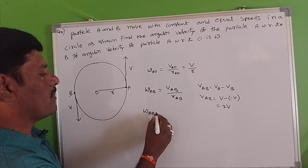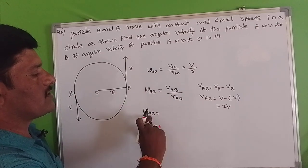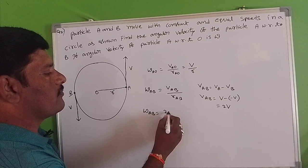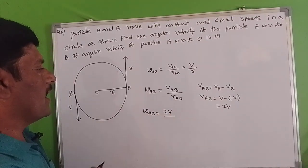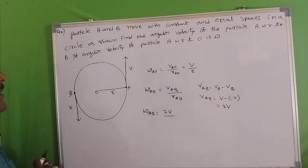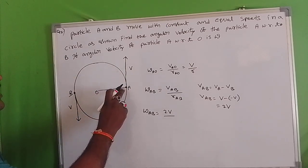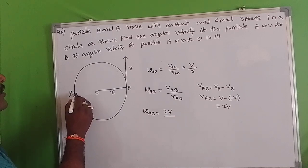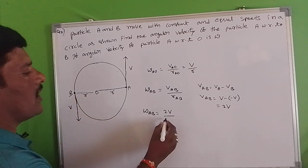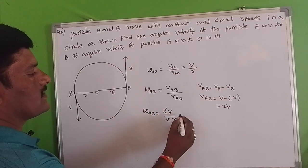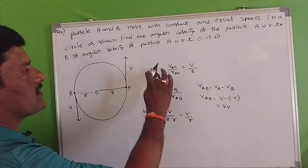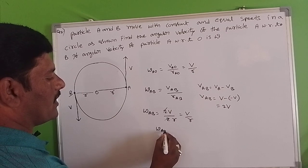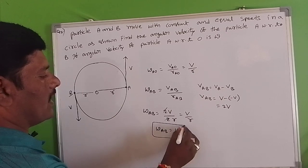The velocity of A with respect to B is 2V. So the angular velocity of A with respect to B equals 2V by R_AB. From the figure, A to O is R and O to B is R, so R_AB equals 2R. Therefore omega_AB equals 2V by 2R — the 2s cancel — giving V by R, which is nothing but omega. So omega_AB equals omega.